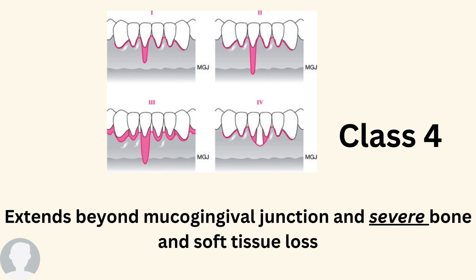Class 4 extends beyond the mucogingival junction with severe bone and soft tissue loss. As you can see in the picture, two teeth are involved — both extend beyond the mucogingival junction and both are exposed at the same time. Because both teeth are exposed together, food will become impacted whenever the patient eats.